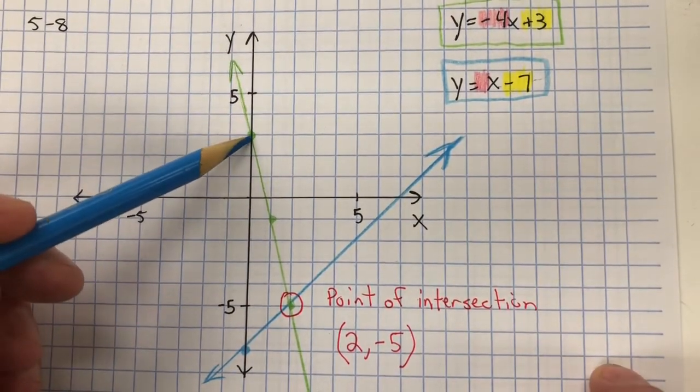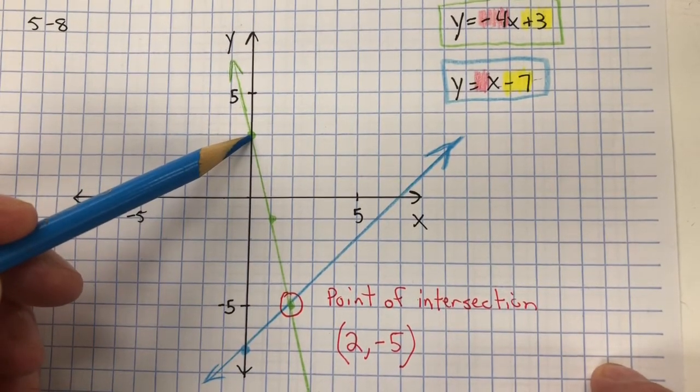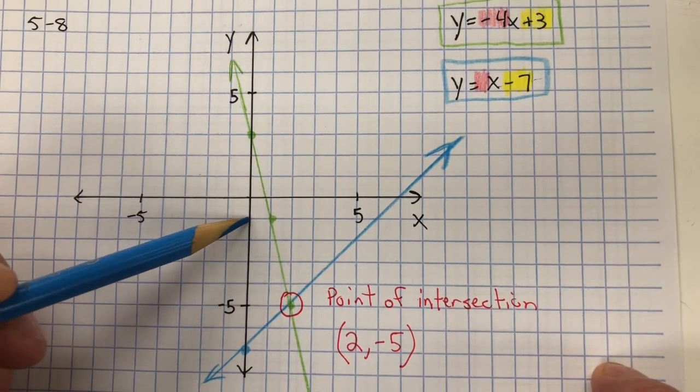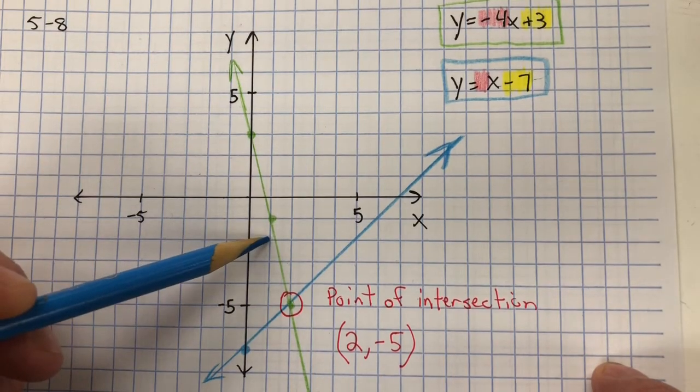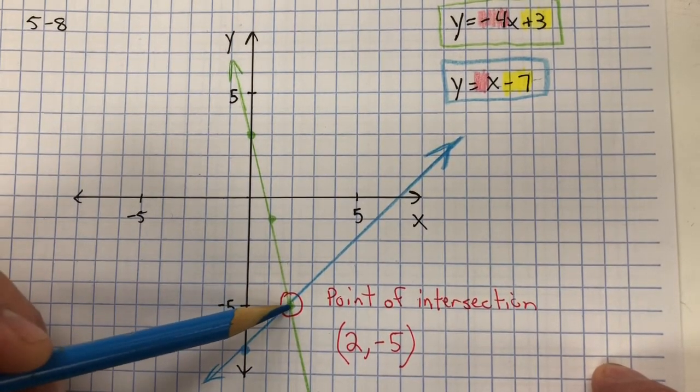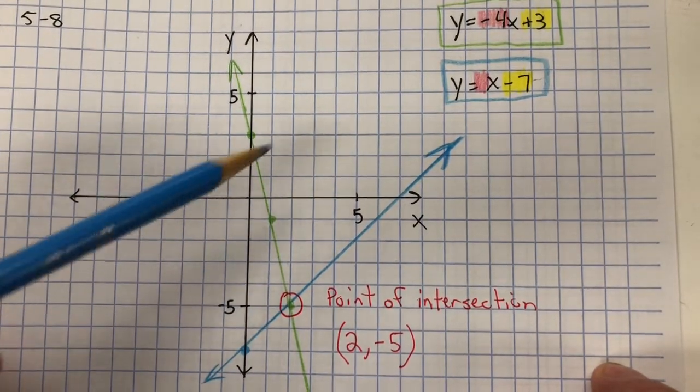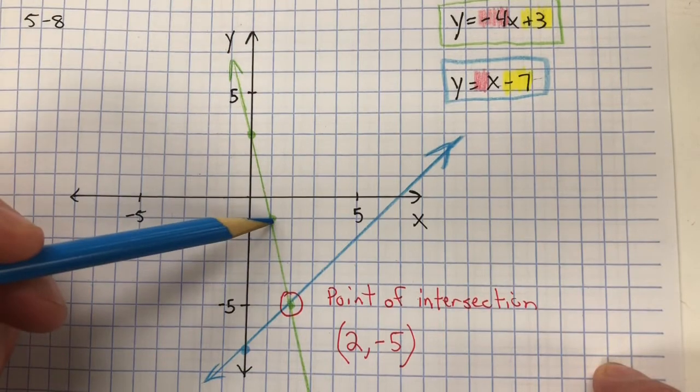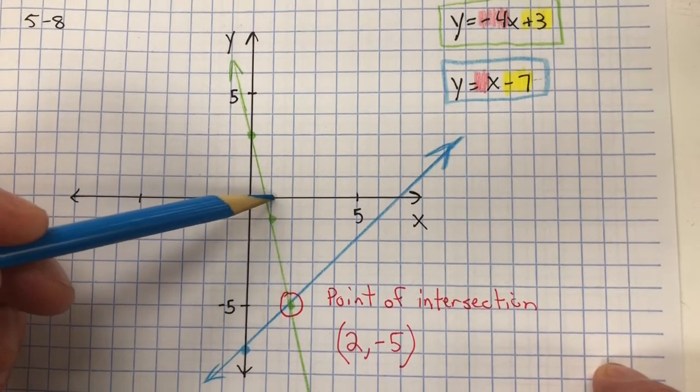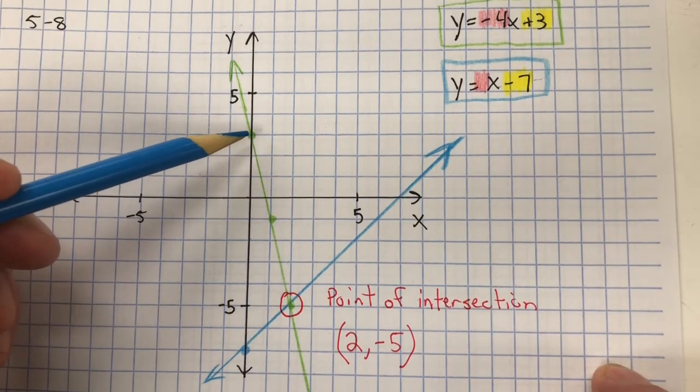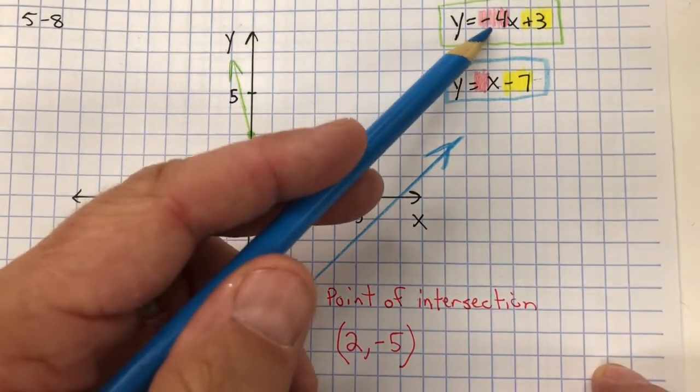And I can go down negative 4, over 1: negative 1, negative 2, negative 3, negative 4, over 1. Because negative 4 over 1 equals negative 4. Or I could do positive 4 up, and negative 1 over. Because 4 divided by negative 1 is still negative 4.